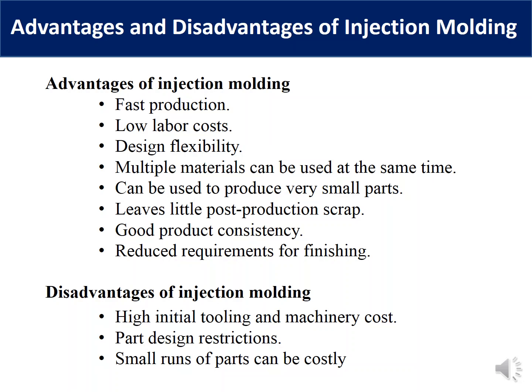Some disadvantages of injection molding include restriction in part design, because the shape and size of the part is restricted by the mold size and injection pressure. Also, small production runs are very costly, because the mold is one of the most expensive parts of the injection molding machine, and one mold is only suitable for one type of product — making small lots uneconomical.